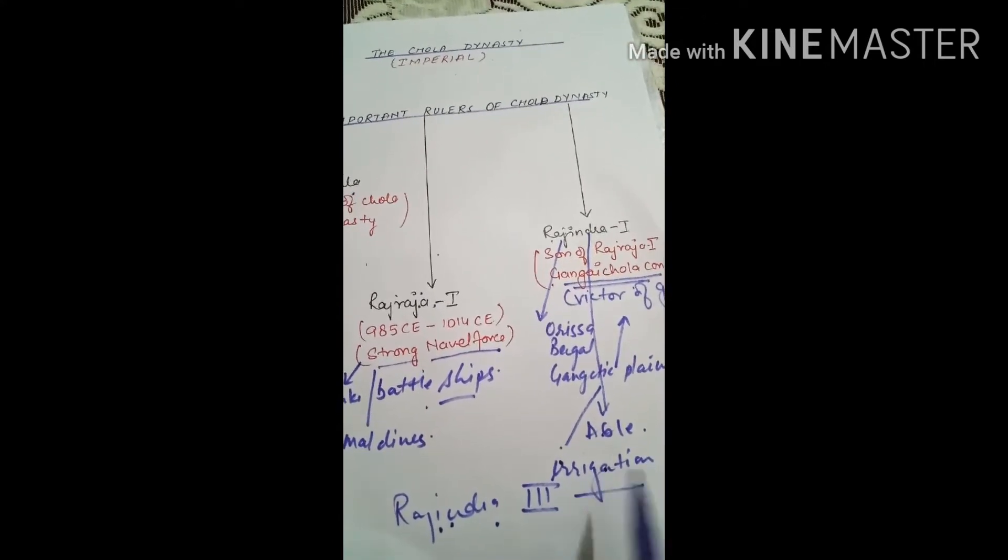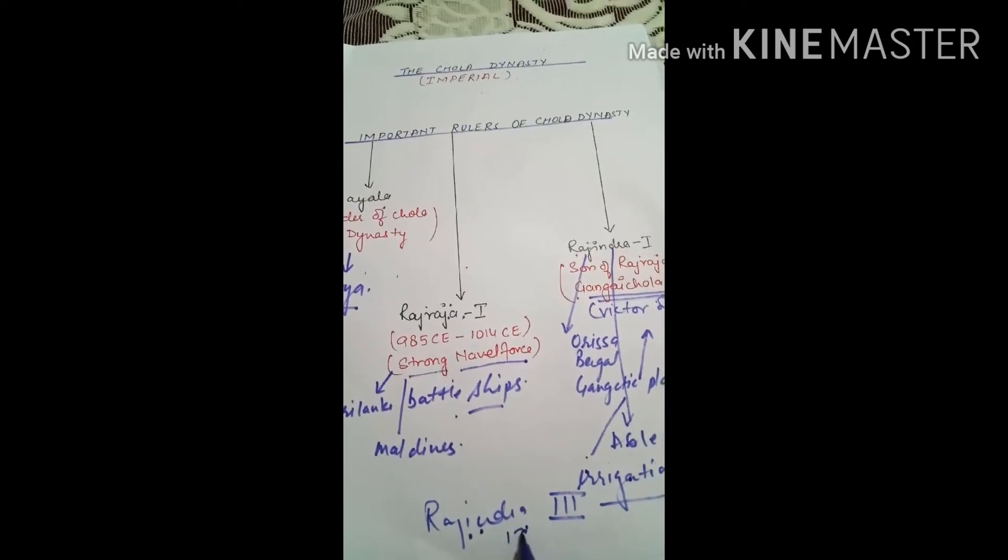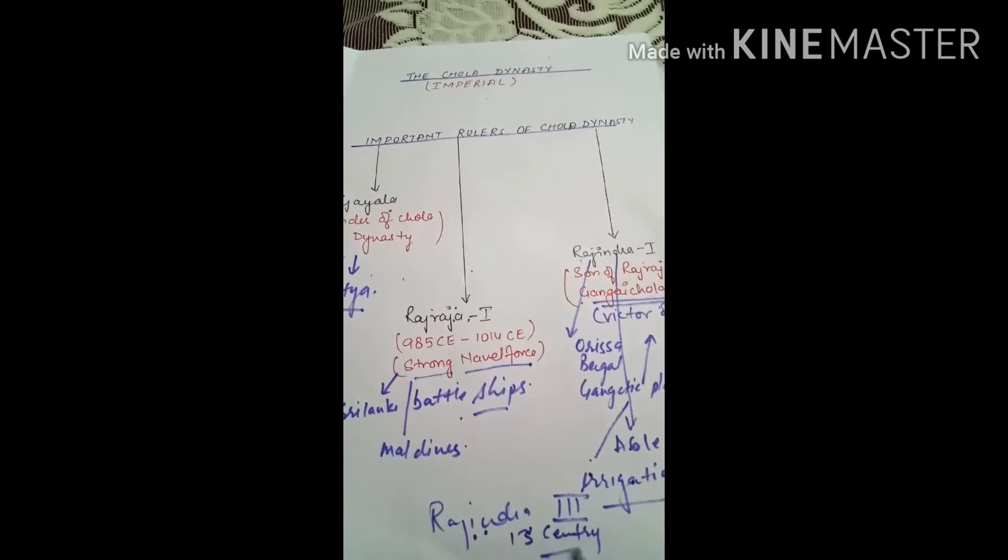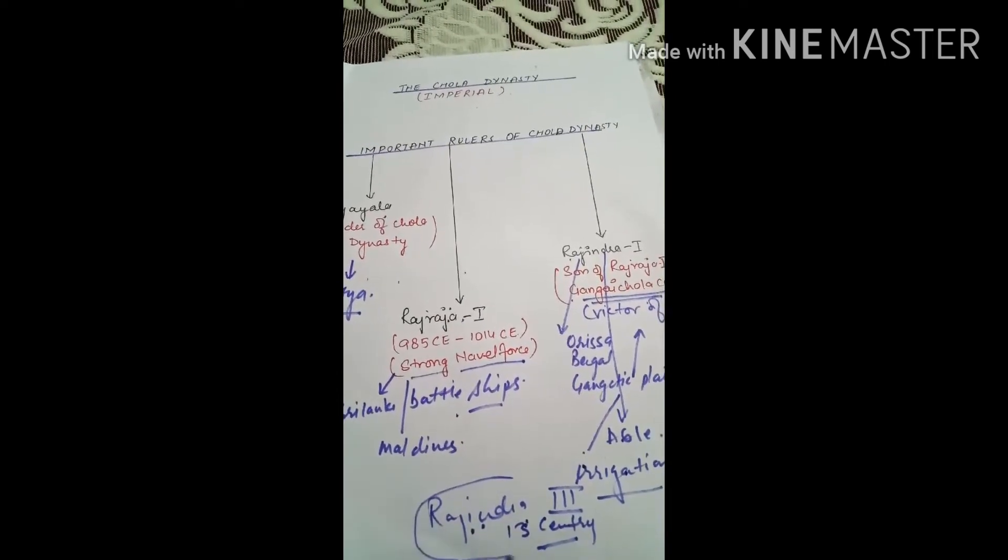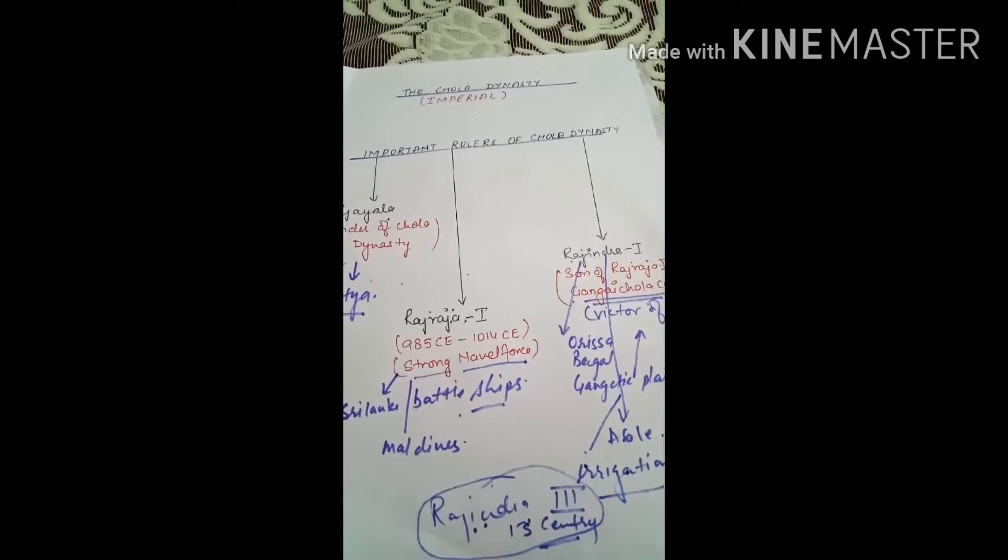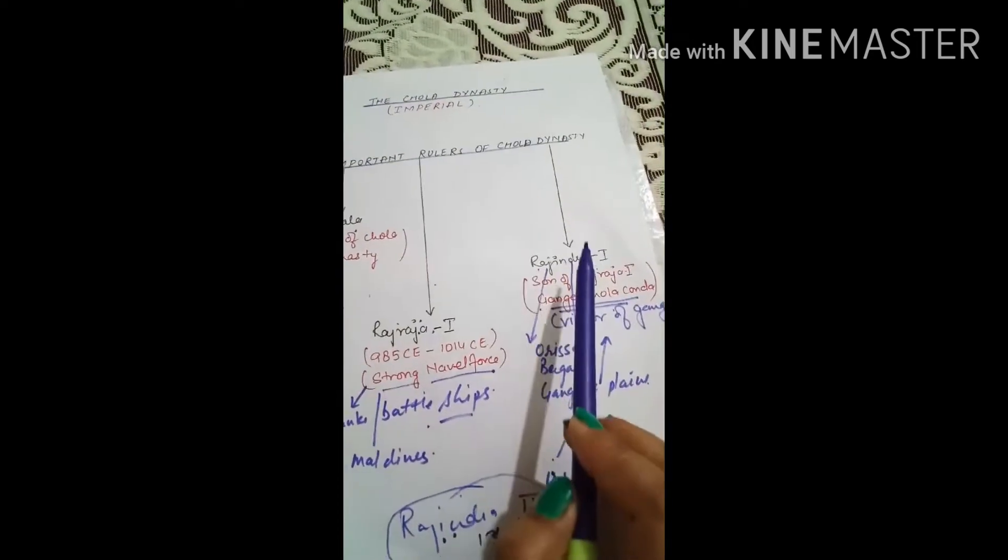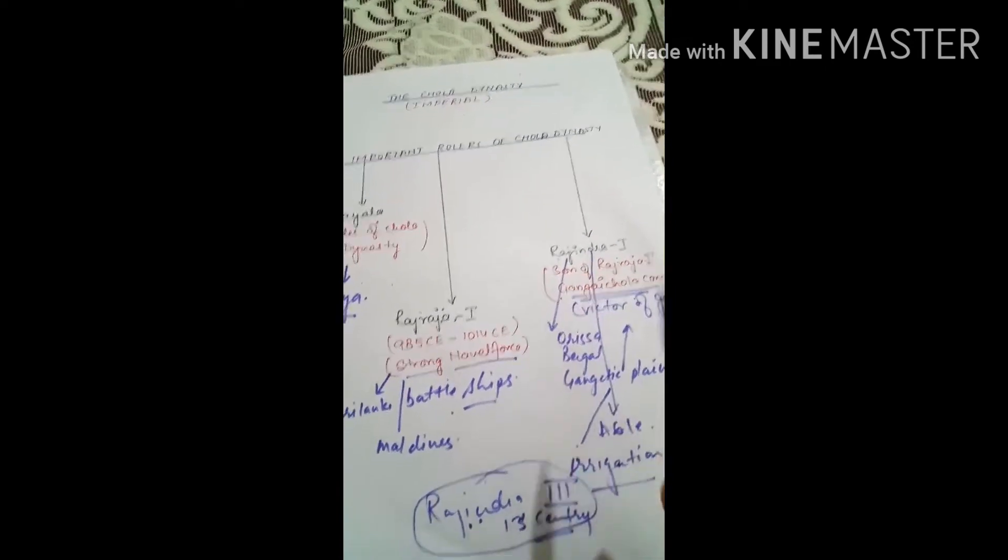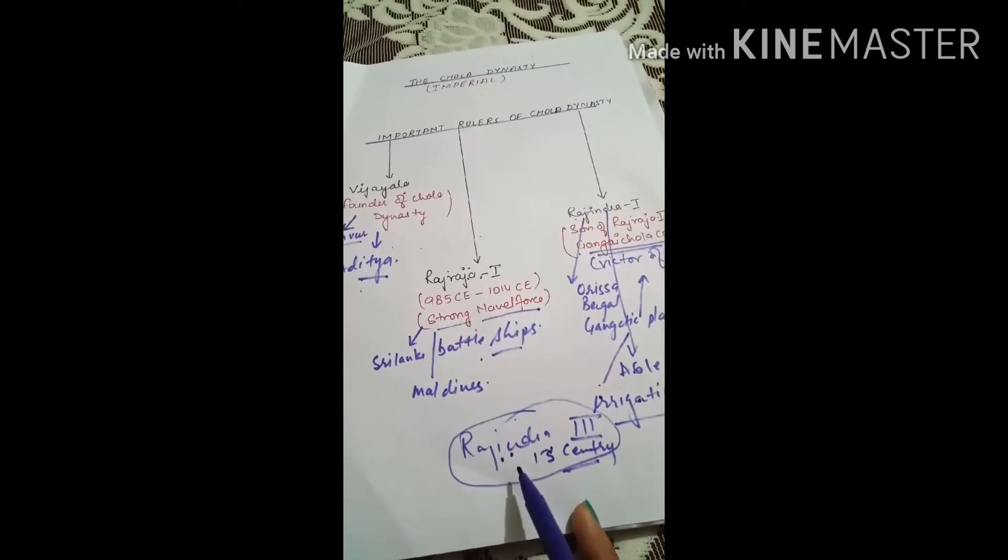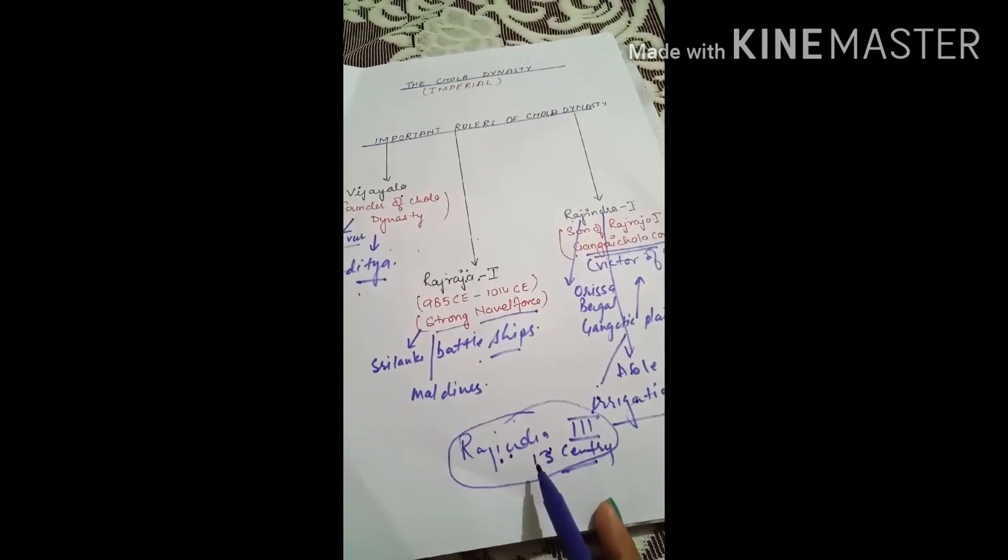Then we talk about Rajendra third, who was in 13th century. The Chola dynasty saw decline during the reign of Rajendra the third. During the rule of Rajendra first, the Chola dynasty saw the zenith, and during the rule of Rajendra third in the 13th century, Chola dynasty saw the decline.